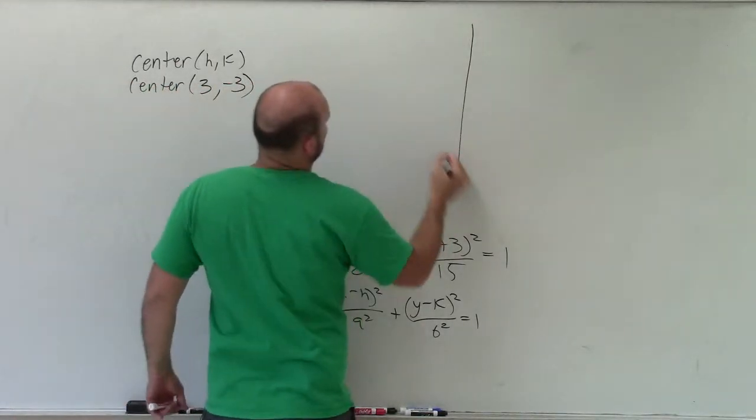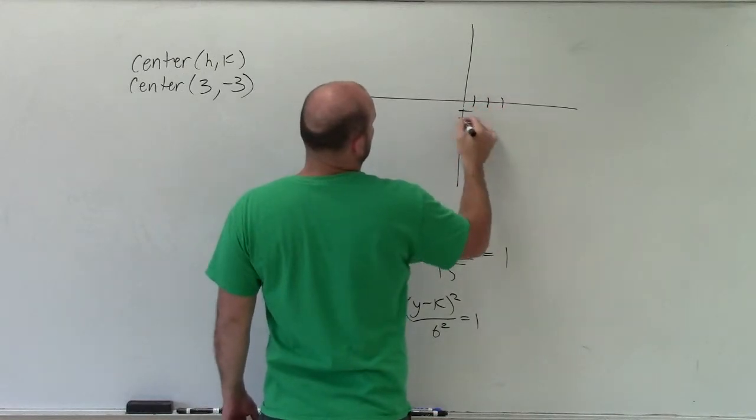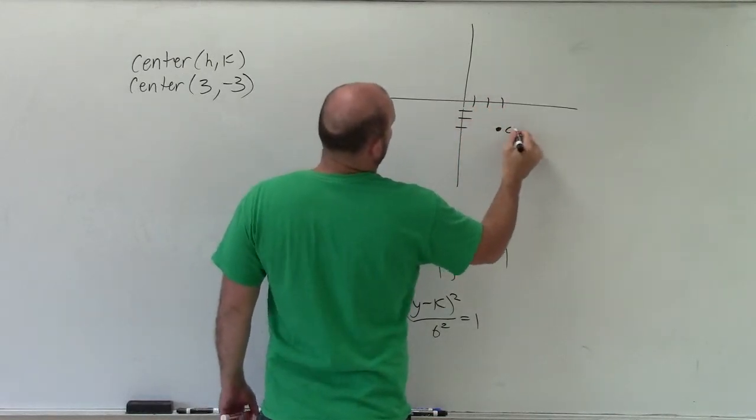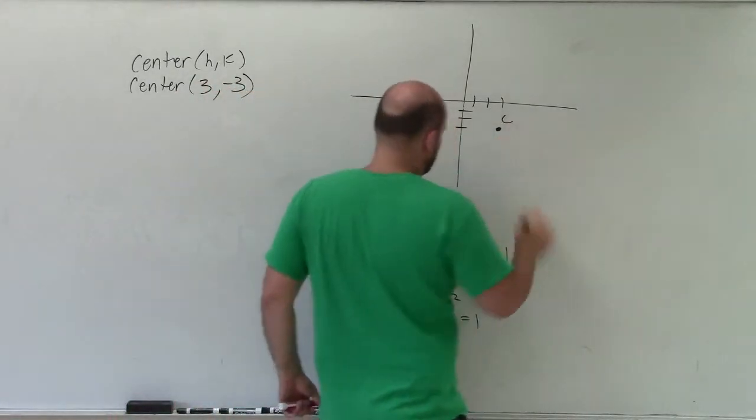So on my graph, I go positive 3, 1, 2, 3, negative 3. And I just label that with a c as a center. Actually, I'll go above because it's a major axis. All right.